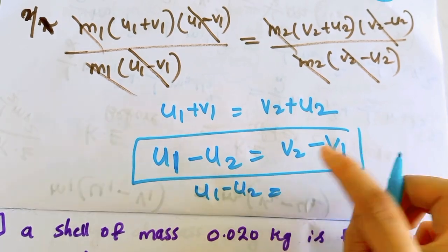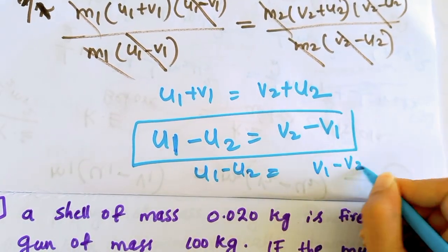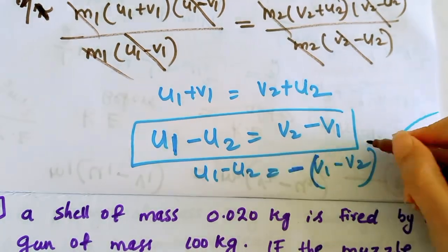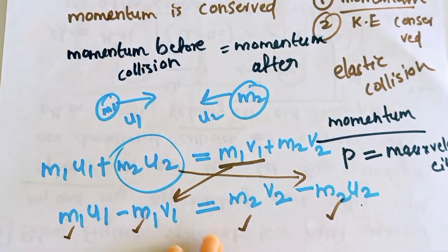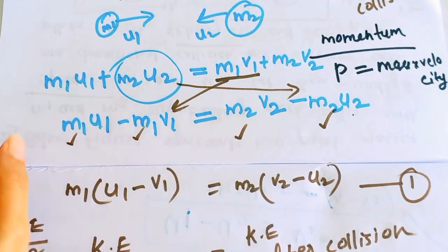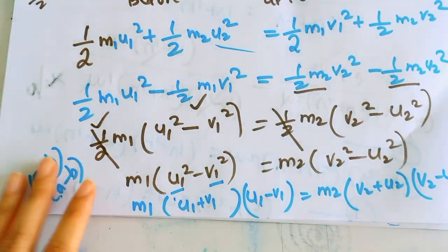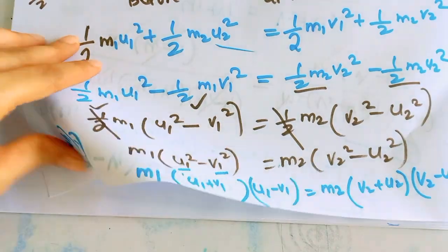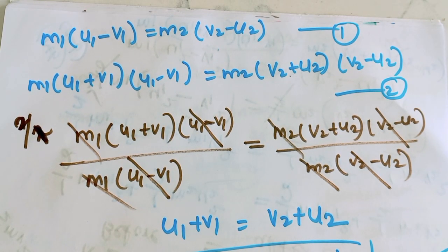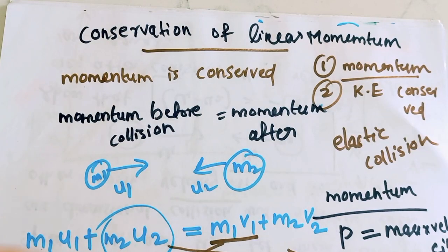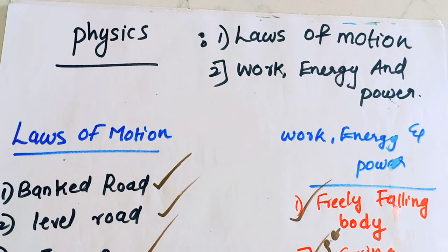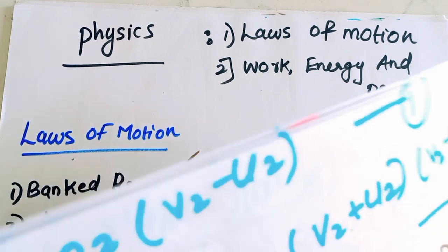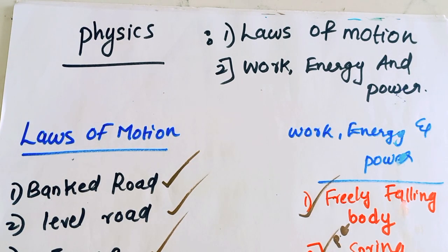Then we will get V2 minus V1, which gives us the derivative result: U1 minus U2 equals minus (V1 minus V2). This is the concept we are understanding. We are learning the subject. In this video, we have seen 4 important questions covering Laws of Motion and Work Energy Power - two important questions with a few problems. Thanks for watching.